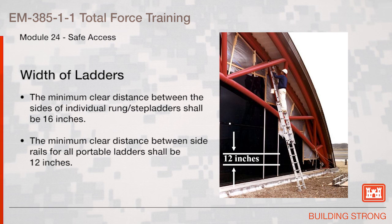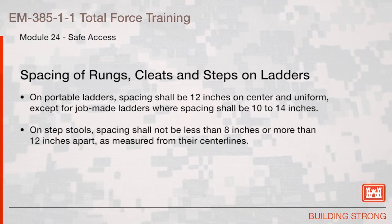Width of ladders: The minimum clear distance between the sides of individual rung stepladders shall be 16 inches. The minimum clear distance between side rails for all portable ladders shall be 12 inches. Spacing of rungs, cleats, and steps on portable ladders shall be 12 inches on center and uniform, except for job-made ladders where spacing shall be 10 to 14 inches. On step stools, spacing shall not be less than 8 inches or more than 12 inches apart as measured from their centerlines.